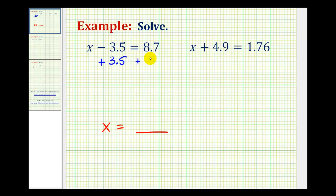And because we're dealing with decimals, we want to make sure that we line up the corresponding place values. So minus 3.5 plus 3.5, that would be zero. So we are left with just x on the left side of the equation.